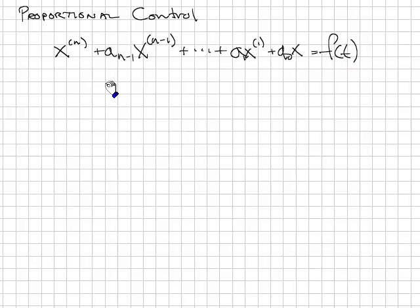Our design approach will be to pick the type of controller that we're going to use and then choose the constants associated with that controller using some design technique. The simplest type of controller is a proportional feedback controller. Given a plant which has a differential equation of this form where x to the parentheses n is the nth derivative, so this is an nth order differential equation with a forcing function or input f of t, we're going to let f of t equals kp times x desired minus x.